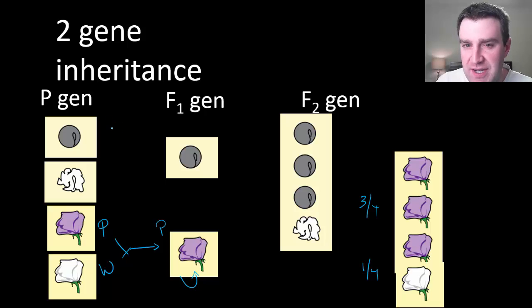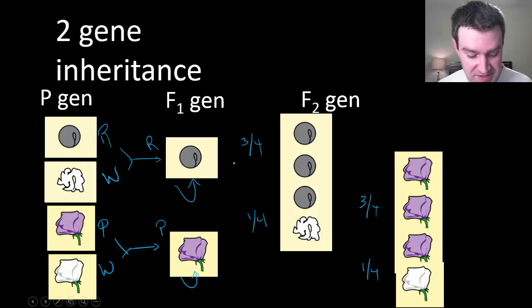He also studied other traits. In some cases he studied seed shape, where maybe it comes out round or wrinkled. As it turns out, round was the dominant trait, and when he self-pollinated the plants, three-fourths came out round, one-fourth came out wrinkled in that third generation.